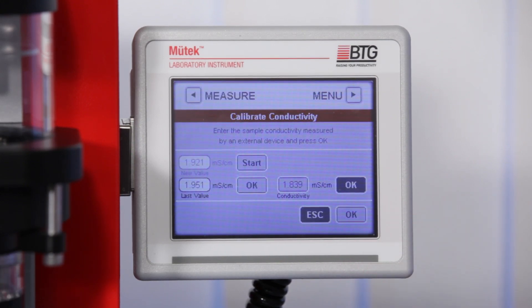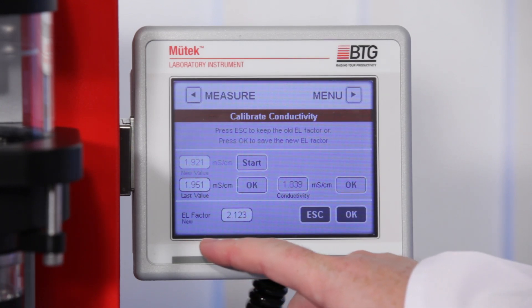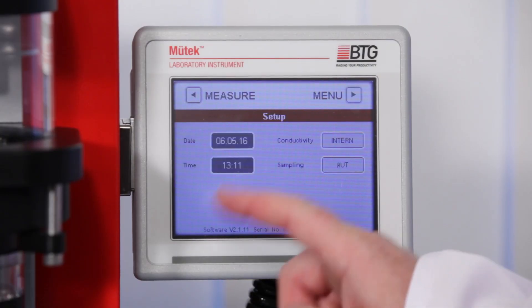Press OK to display the newly calculated EL factor. Let's have a look at the setup menu. Besides adjusting date and time, you can here select automatic or manual measurement.